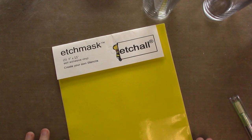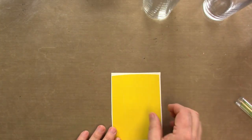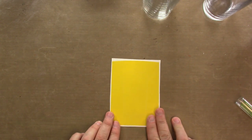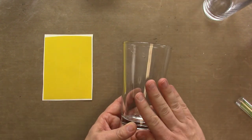Start by cutting a stencil out of Etchmask self-adhesive vinyl, and I have one done here, ready to go. Then I've got my glass. I want to make sure that it's really clean.